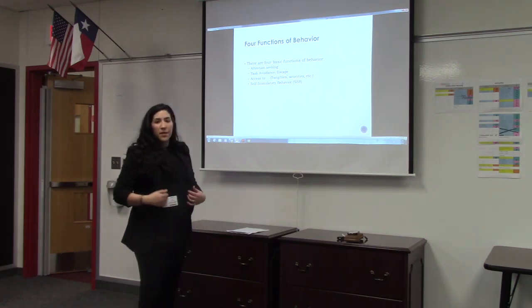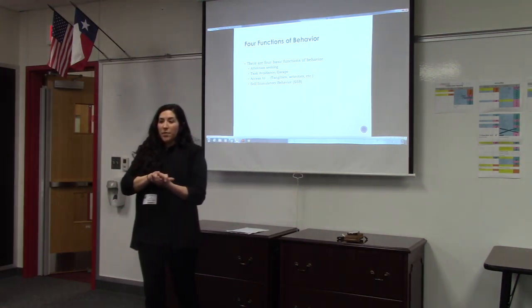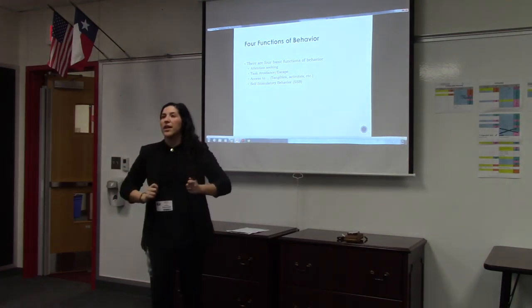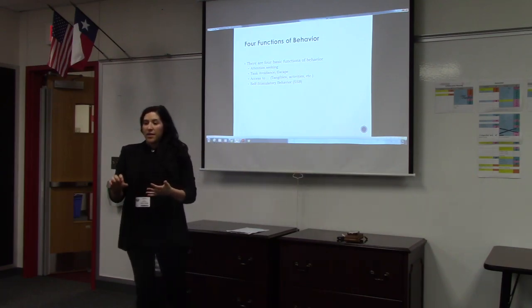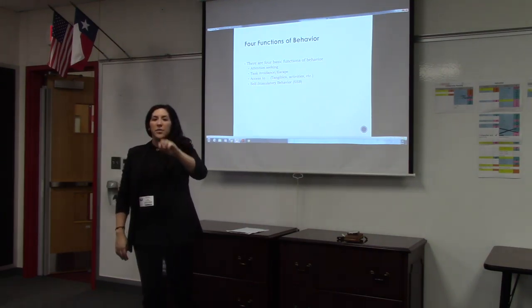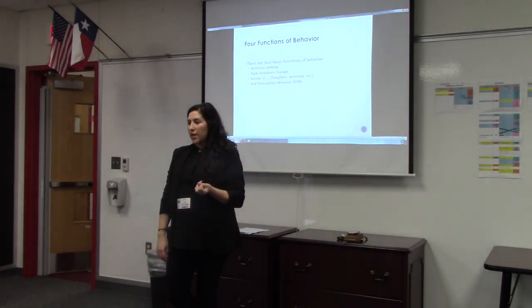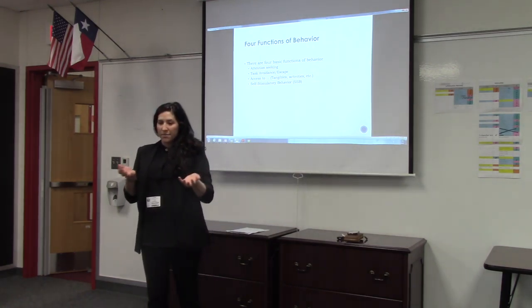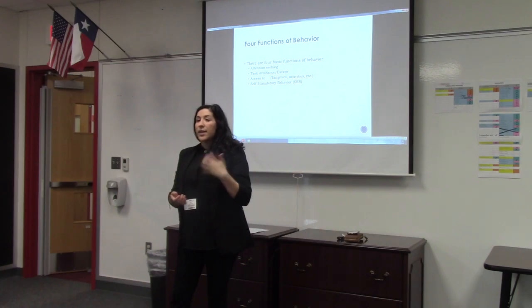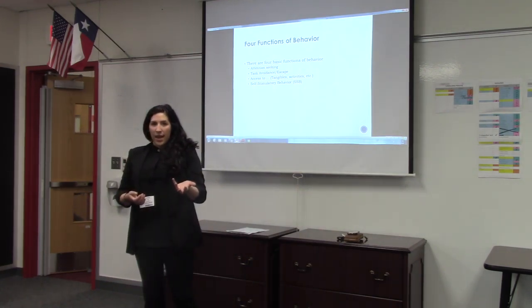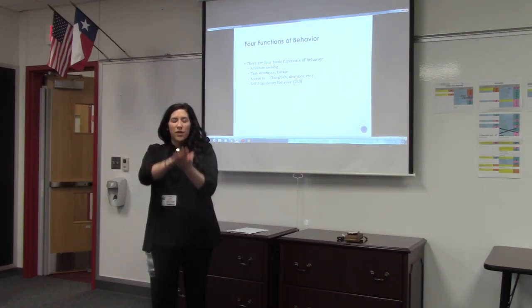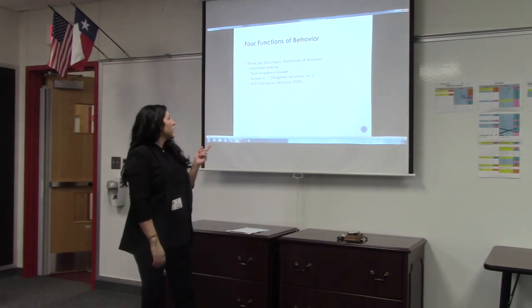The next function is task avoidance or escape — either trying to avoid starting a non-preferred task or escape one they're already in. This might look like getting ready for bedtime, brushing teeth, doing homework, or cleaning up. On the antecedent side you'll see asking them to do something or them being in the middle of something they don't like. On the consequence side, they typically get out of the task or get your help with it. So look for a trend in consequences and antecedents if you're thinking it's task avoidance and escape.